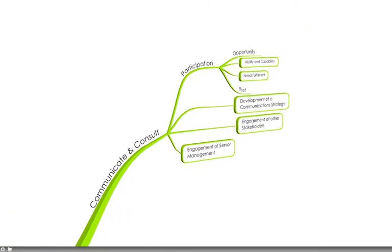One of the first components is communication and consultation. First of all, it's important to have participation, seeking out the ability and capability of the individuals, the needs fulfillment, the opportunity associated, and above anything else, it's engaging and engendering trust. We then need to look at the development of a communication strategy for the engagement of stakeholders, both senior management and external, if not other stakeholders in the process.